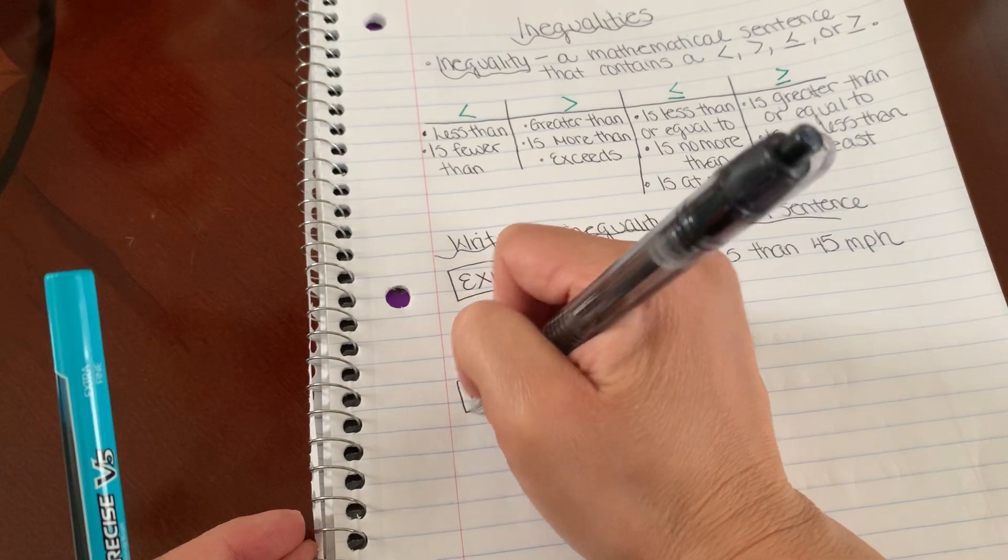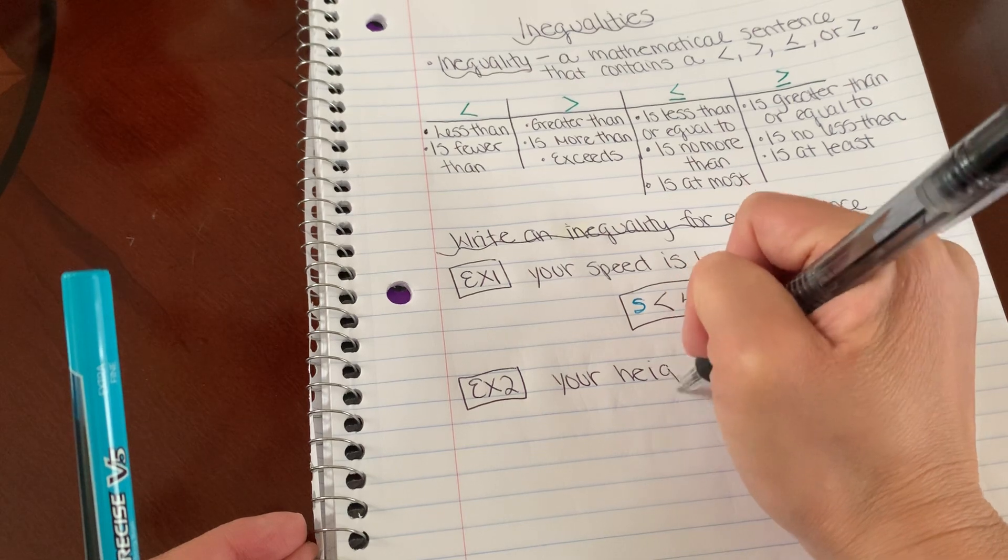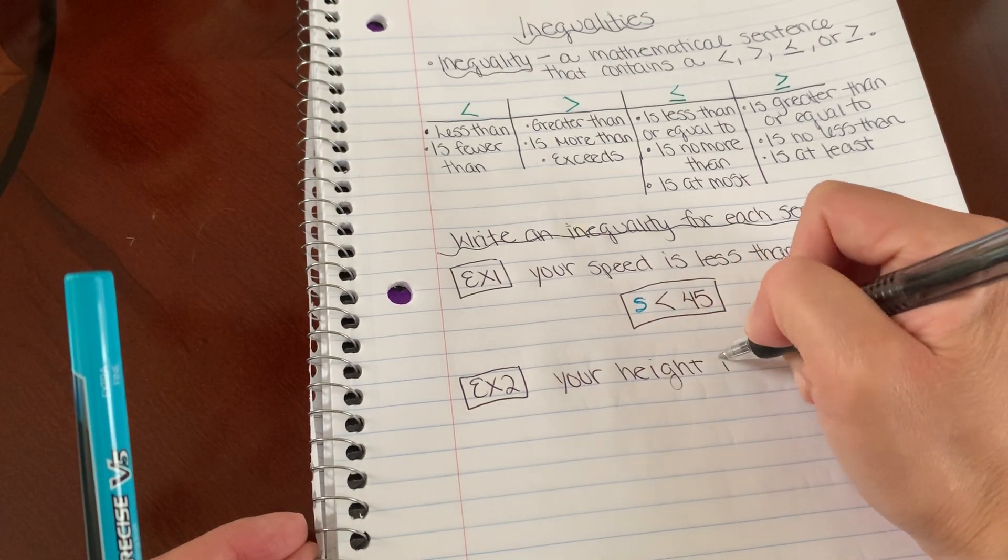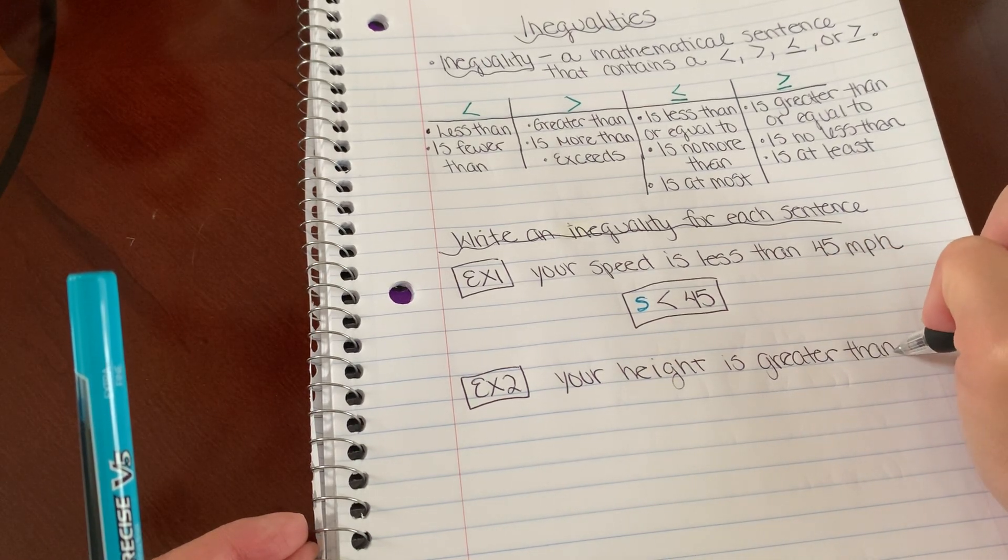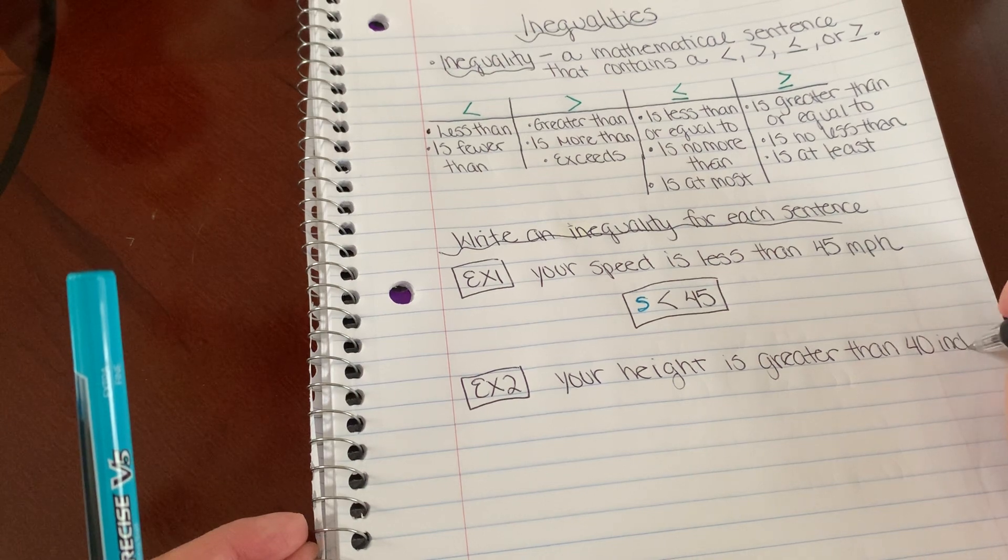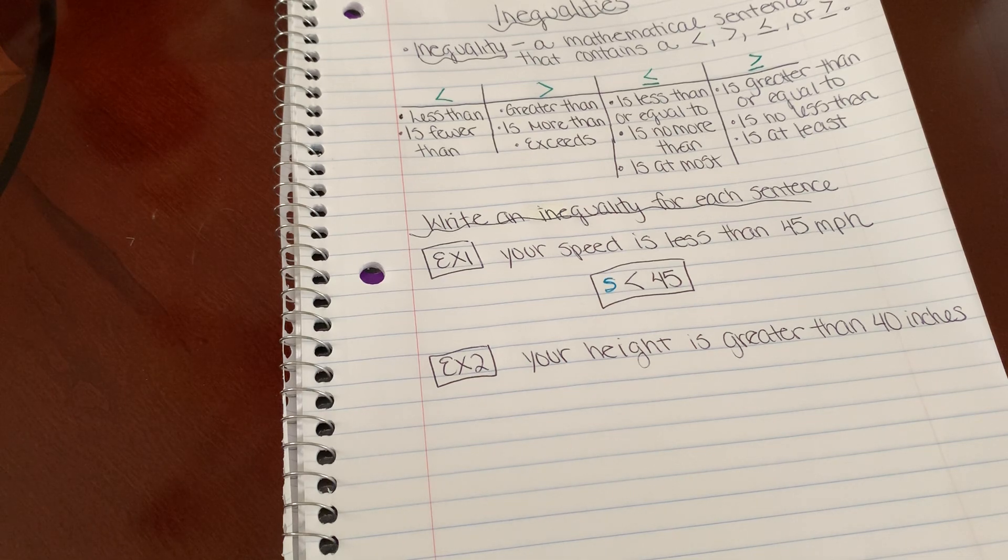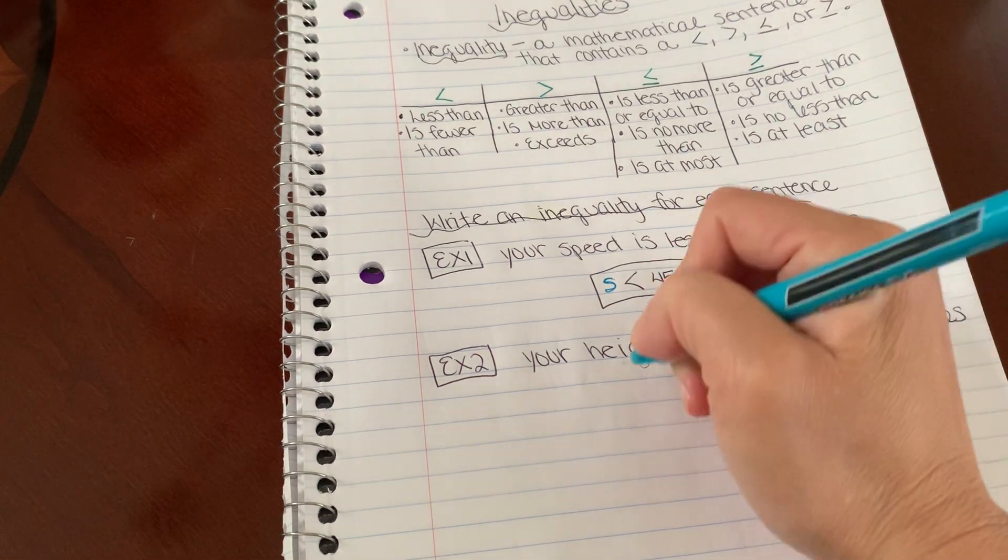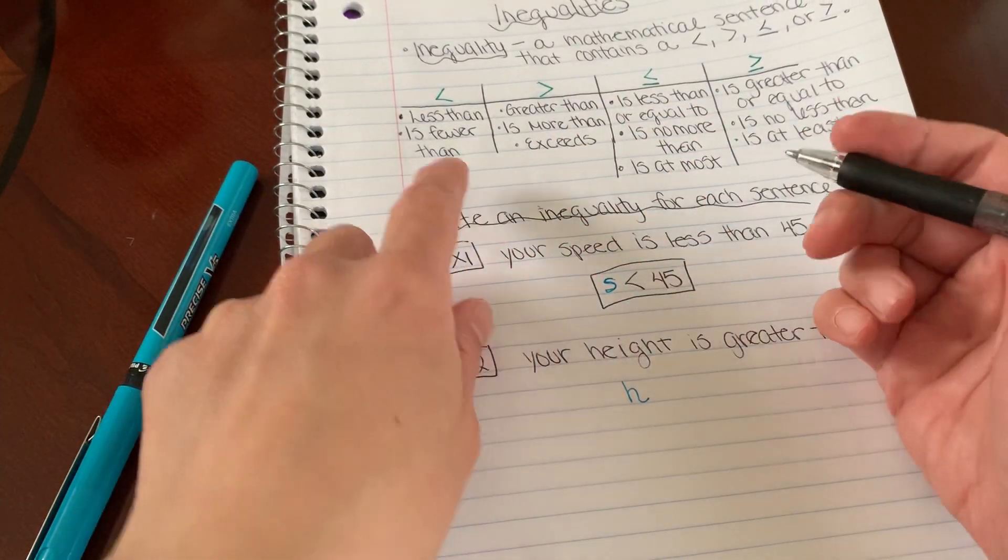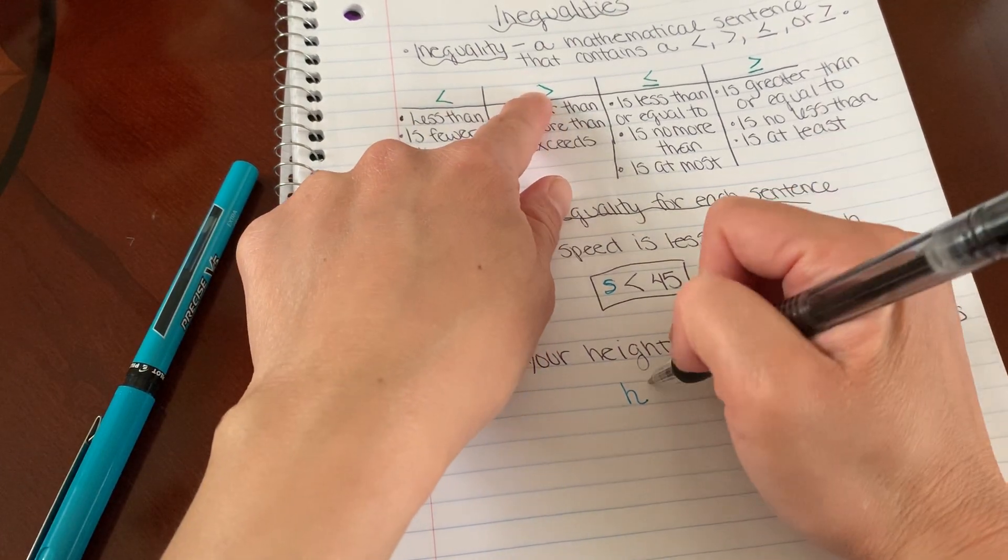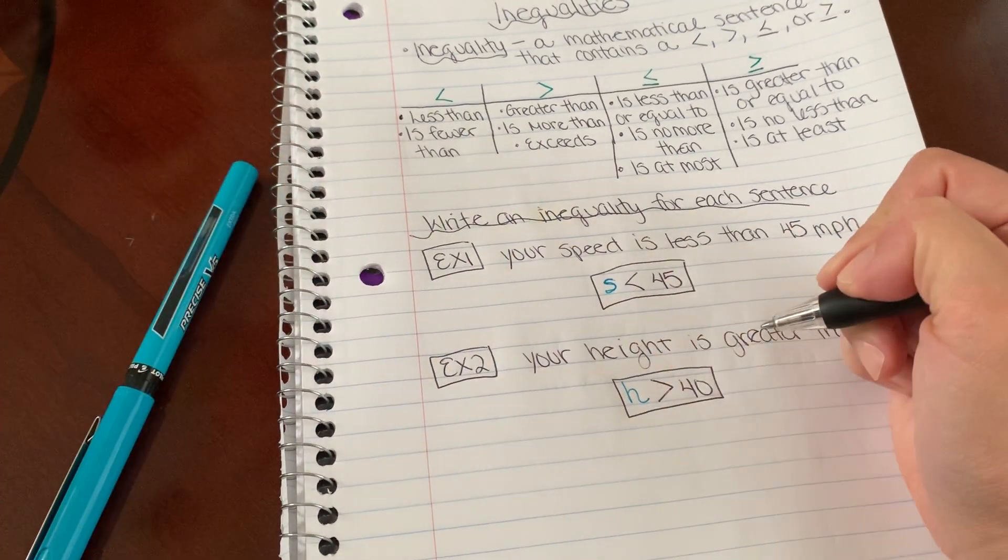Example two. Your height is greater than 40 inches. So let's use the variable H for height. You could pick anything you want, but I'm going to go with H. And then which symbol is for greater than? Here it is. So greater than 40. Perfect.